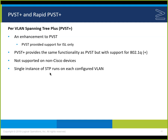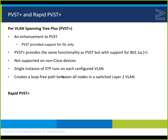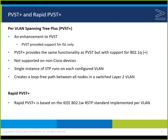PVST+ provides a single instance configured for each VLAN and a loop-free path between all nodes in a switched Layer 2 VLAN. Rapid Per-VLAN is based on 802.1W — the Rapid Spanning Tree standard — on a per-VLAN basis. It's easy to change from one to the other, eliminating one of the forward delays. I've got some demos to set up — imagery will help, though rapid mode in Packet Tracer is faster than it really is.